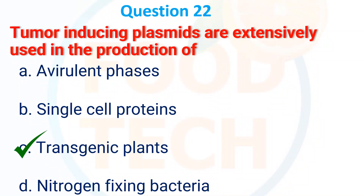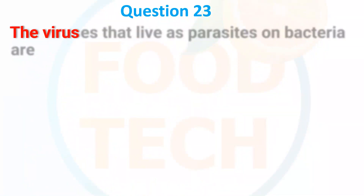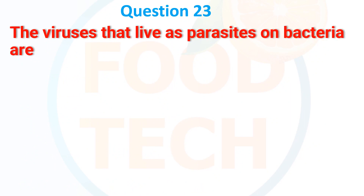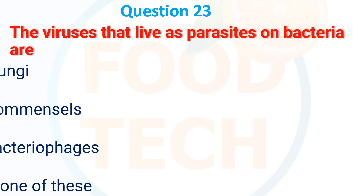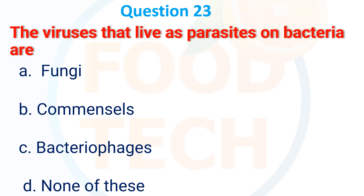The virus that lies as a parasite on bacteria are: A. Fungi, B. Common cell, C. Bacteriophage, D. None of these. The answer is C: Bacteriophage.